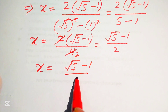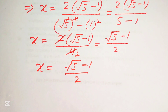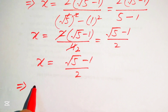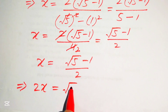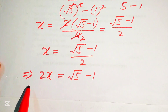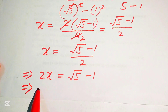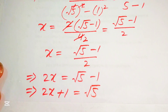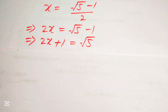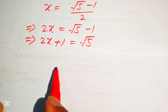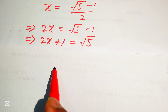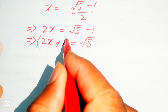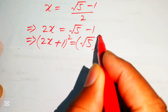We rearrange: multiply both sides by 2 to get 2x = √5 − 1, then move −1 to the left to get 2x + 1 = √5. To find x¹², we square both sides: (2x + 1)² = (√5)².